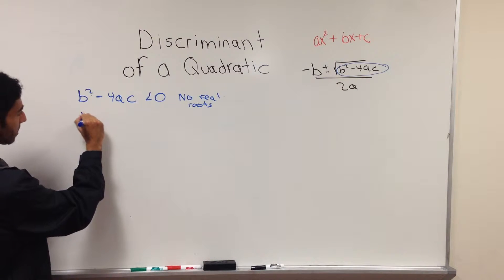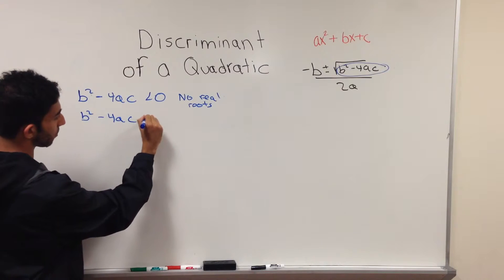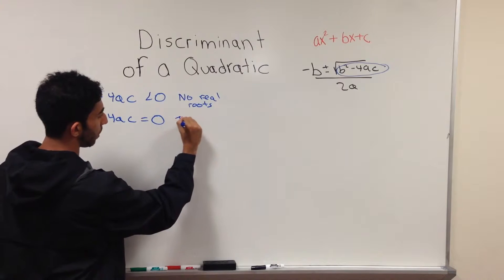When you do b² - 4ac and it equals zero, you get a value of zero and you have one real root.